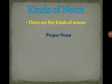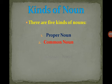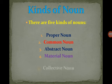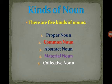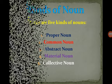There are five basic kinds of nouns. The first one is the proper noun — you can see it on the screen, you can note it down. The second is the common noun. Then there is abstract noun, material noun, and collective noun. These are the five types of nouns.